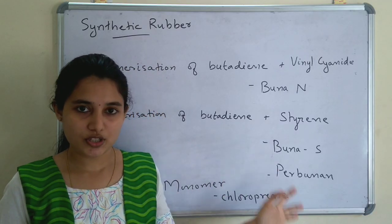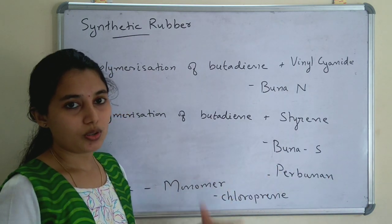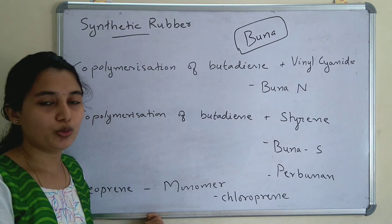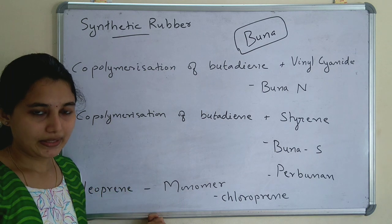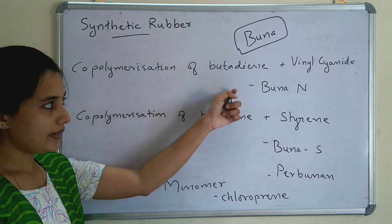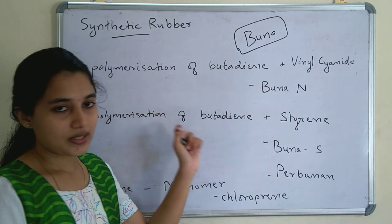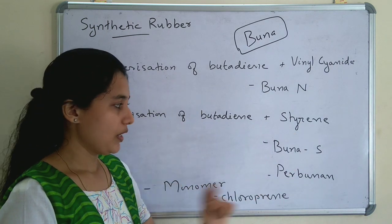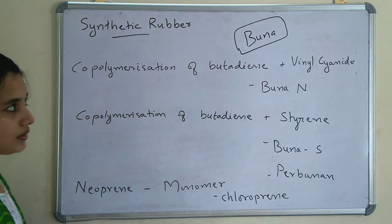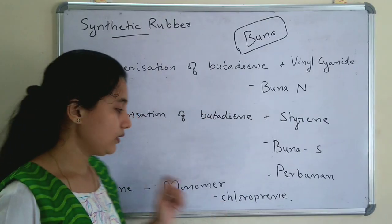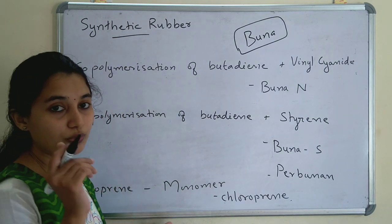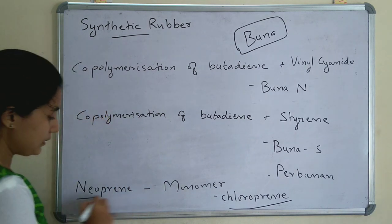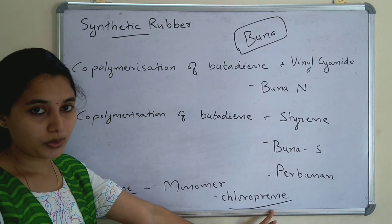Rubber can also be synthesized artificially — this is called synthetic rubber, also known as Buna. Co-polymerization of butadiene and vinyl cyanide gives Buna-N, while co-polymerization of butadiene and styrene gives Buna-S (also known as per-Buna). These are the two main examples of synthetic rubber. Finally, neoprene is another synthetic rubber whose monomer is chloroprene — chlorine-substituted isoprene.